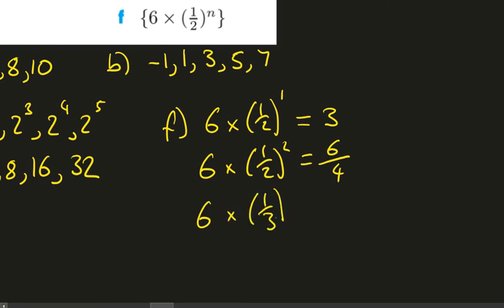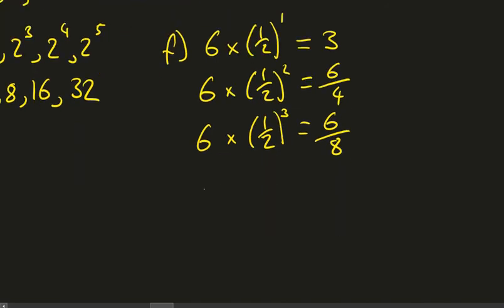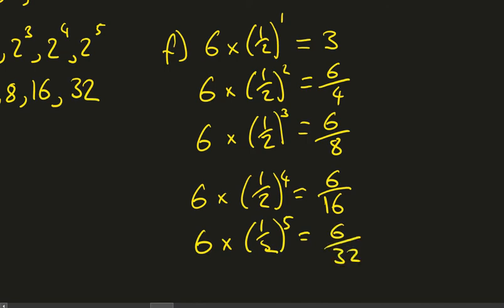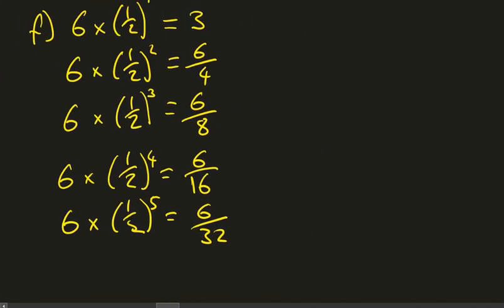So, 6 times 1 half cubed, that's going to be 6 over 8. And I think we can see the pattern coming now. This will be 6 over 16. And the final term we're looking for, the fifth term, when we input N is 5, is going to be 6 over 32. Now, maybe we can simplify our sequence a little here. So let's do that. We are going to end up with 3, 3 over 2, 3 over 4, 3 over 8, and then 3 over 16 as our final answer.